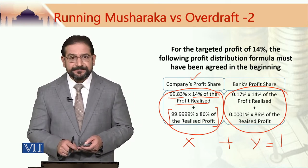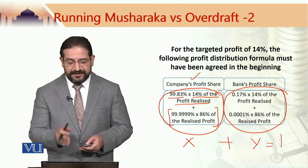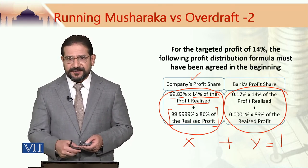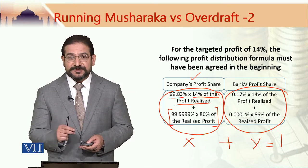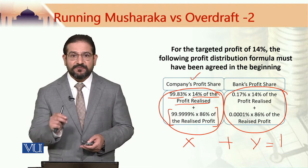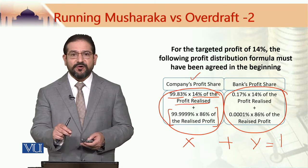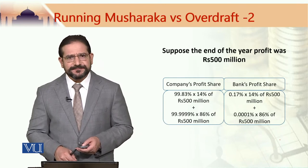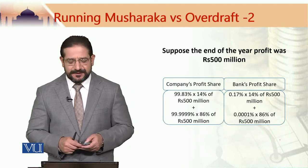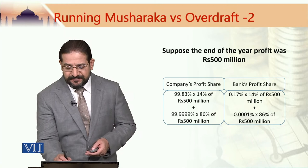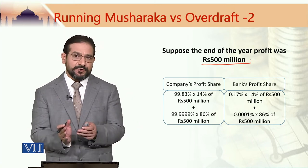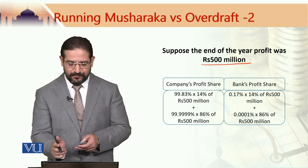Let us put some numerical values in this formula to see what kind of return the bank receives from its overdraft facility of 1 crore rupees offered to a company. Suppose at the end of the year the company generated 500 million rupees profit. We put this value in the formula, with 99.83% and 14% already there.